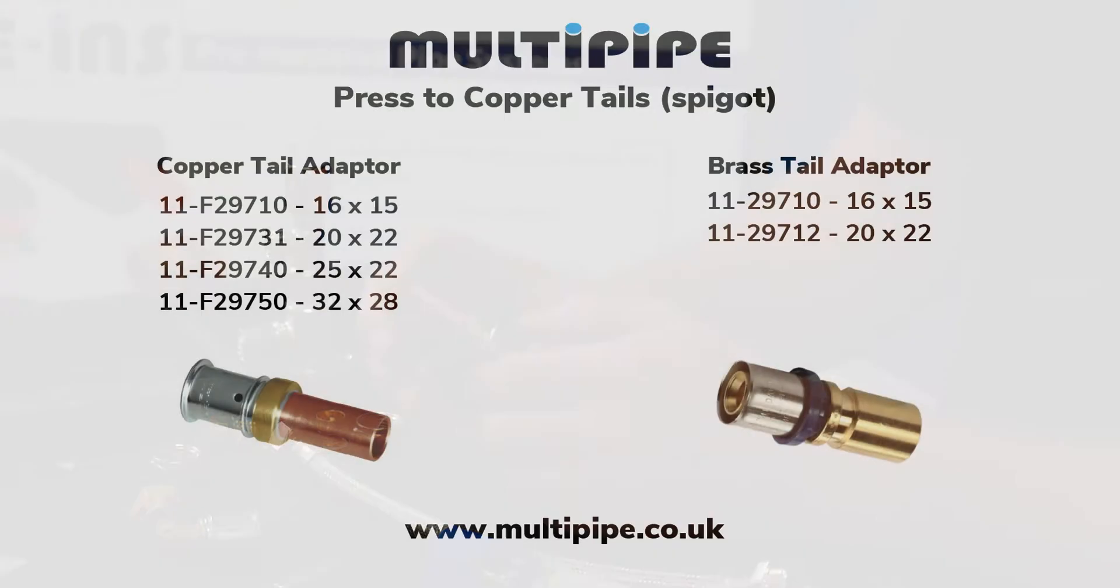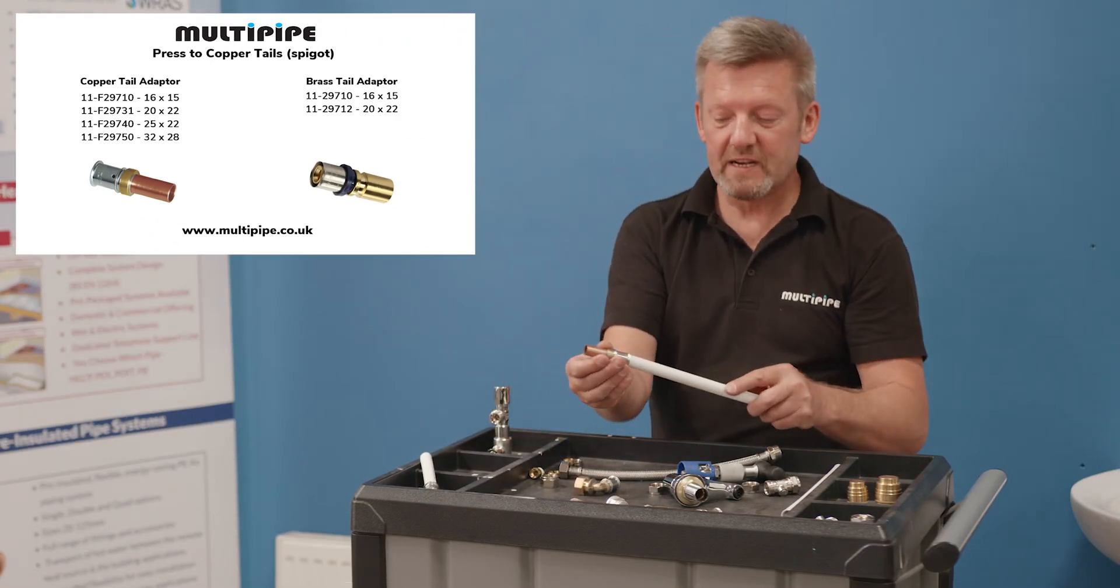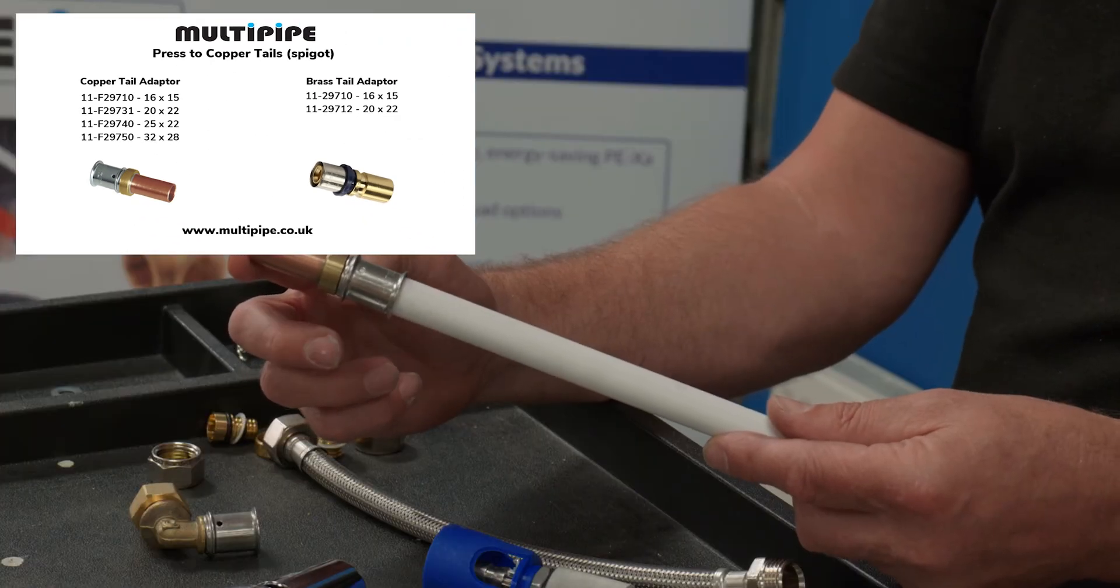Some of the other fittings that can be regularly used, press to copper tails has been around for a number of years and still wear years. I've got a stub of 15mm copper and MLC can directly be pressed onto the other side of that if that's an alternative for you.